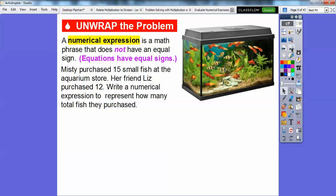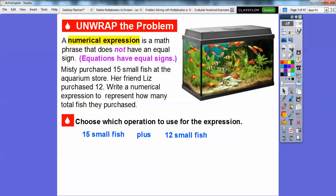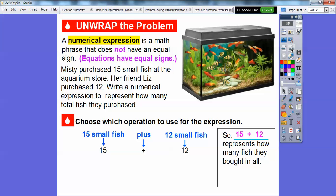So here's an example. Misty purchased 15 small fish in an aquarium store. Her friend Liz purchased 12. We're going to write a numerical expression to represent how many total fish they purchased. This is pretty easy. Hopefully you can follow along. So choose which operation to use for the expression. We have 15 small fish from Misty, and we're going to add Liz's small fish. So that's a plus sign. She had 12, so it's just going to be 15 plus 12. And that's your answer.